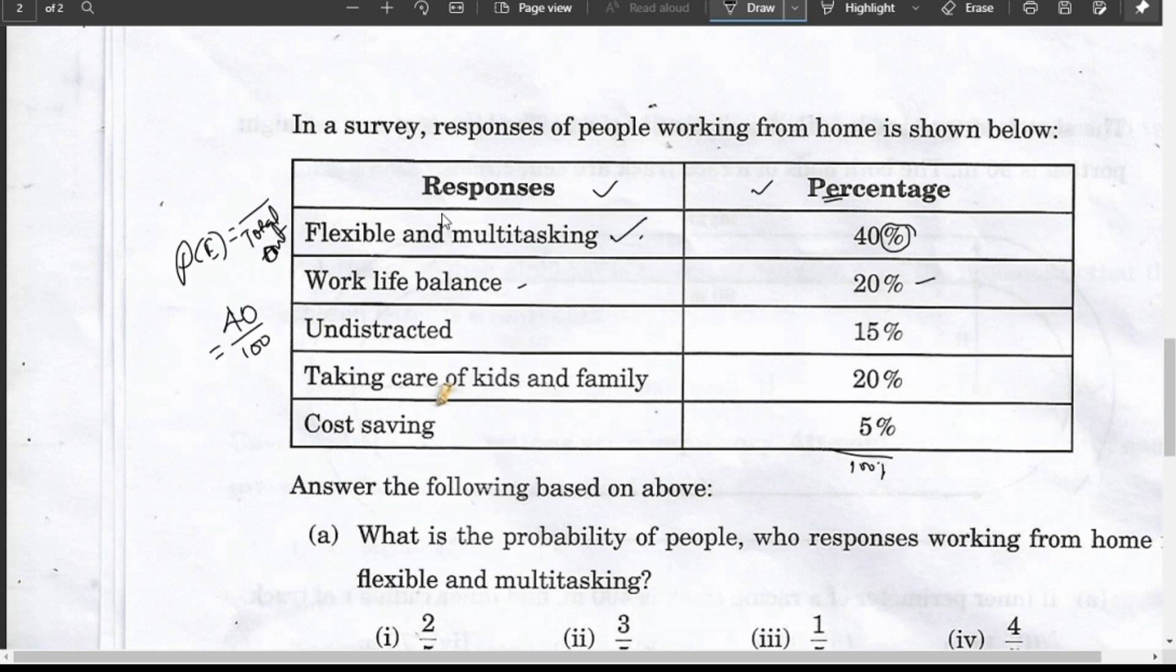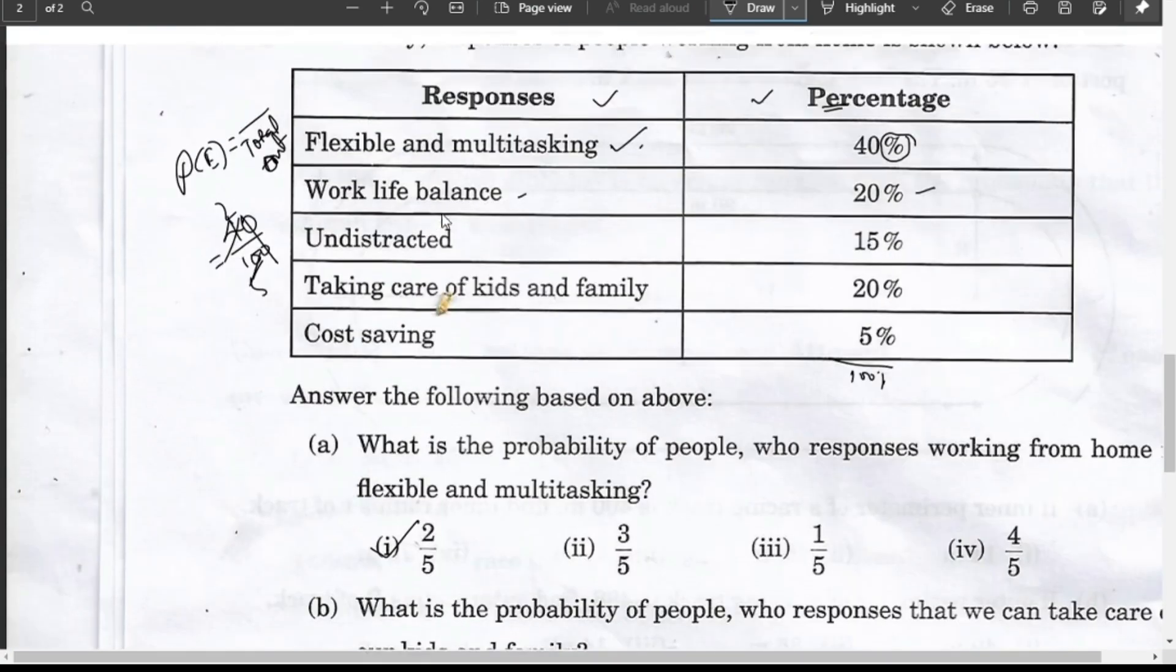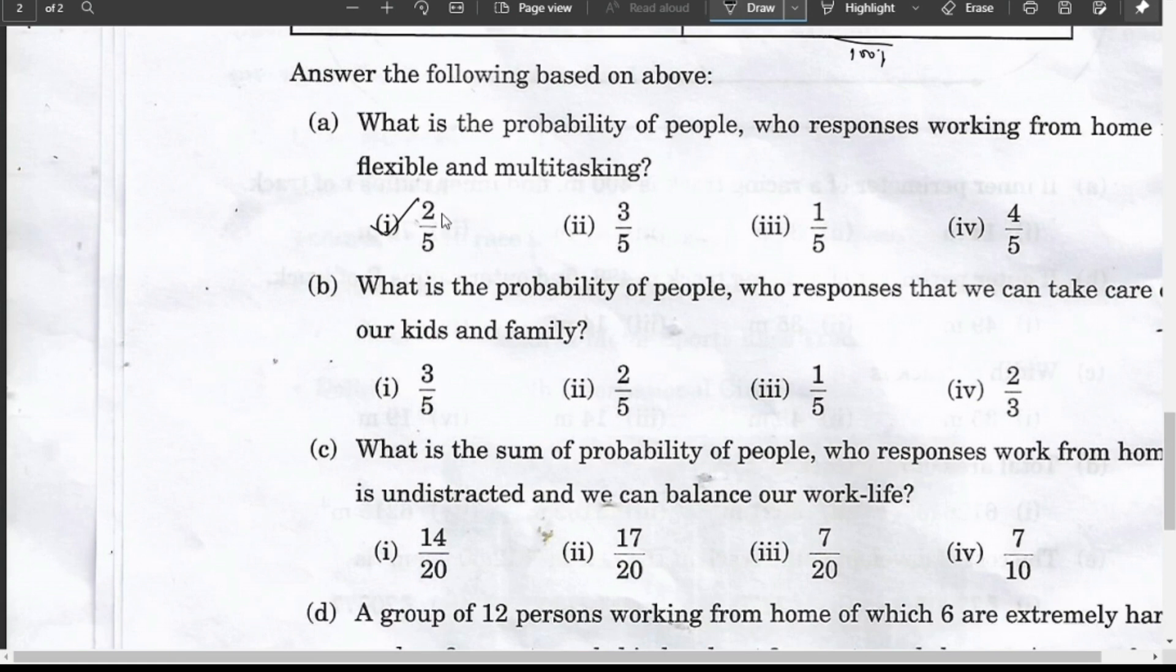40 divided by 100 cancels to get 2/5, so your answer is 2/5. Question (b): What is the probability of people whose response is that we can take care of our kids and family? While working from home they can take care of kids and family - that is 20%. 20 divided by 100 equals 1/5, so the answer is 1/5.